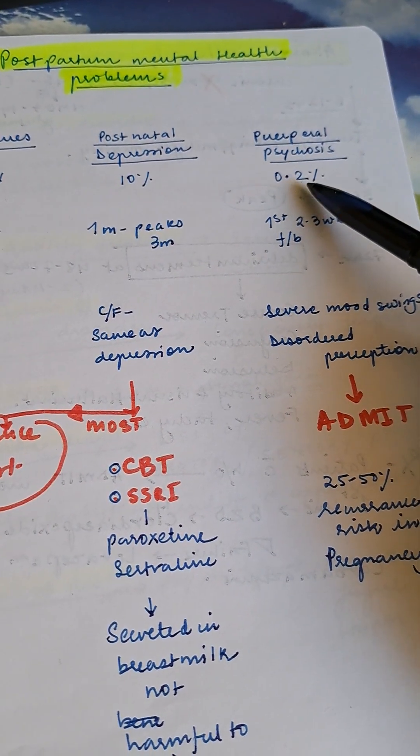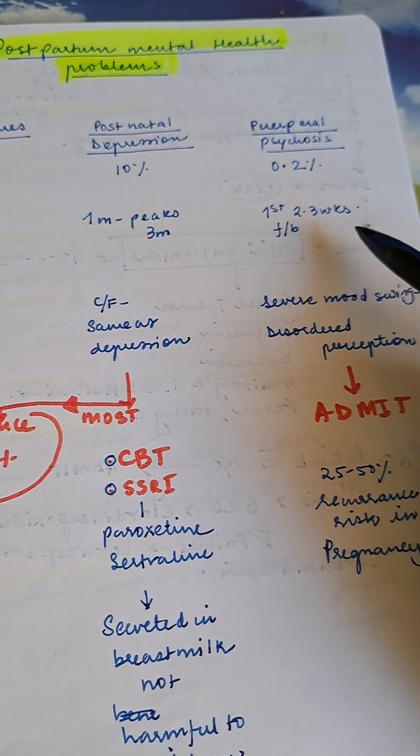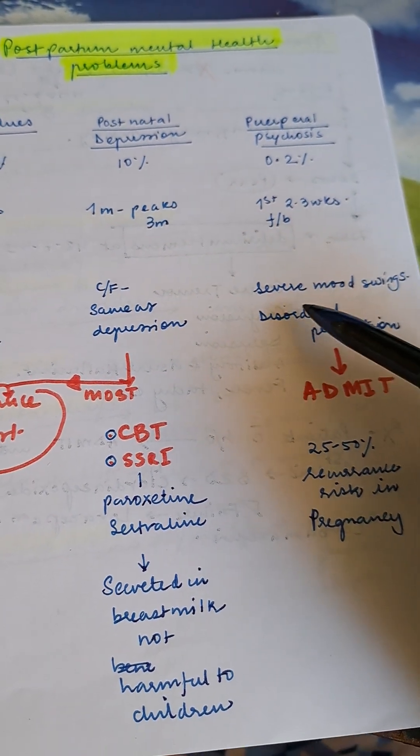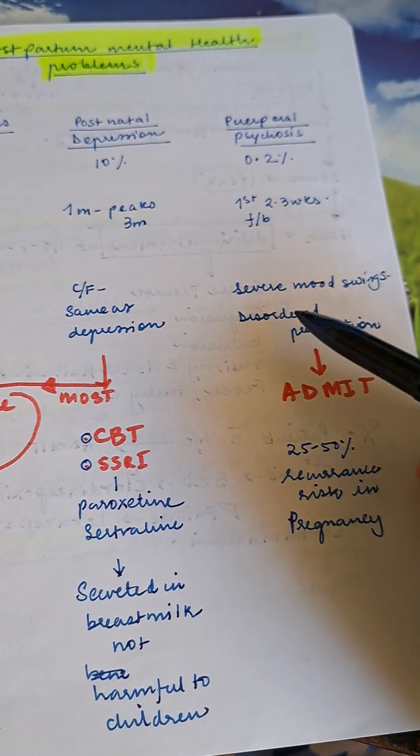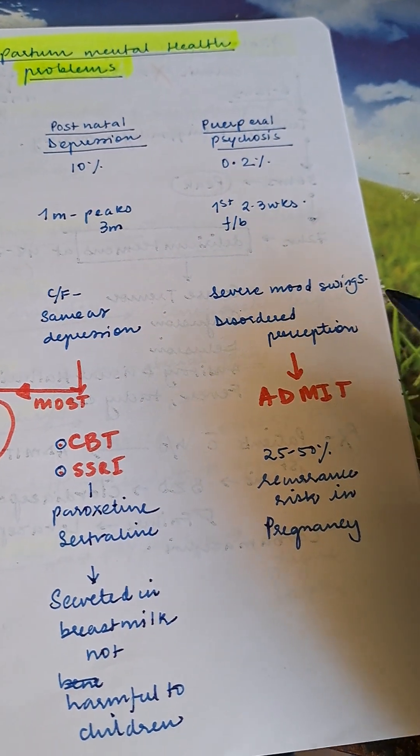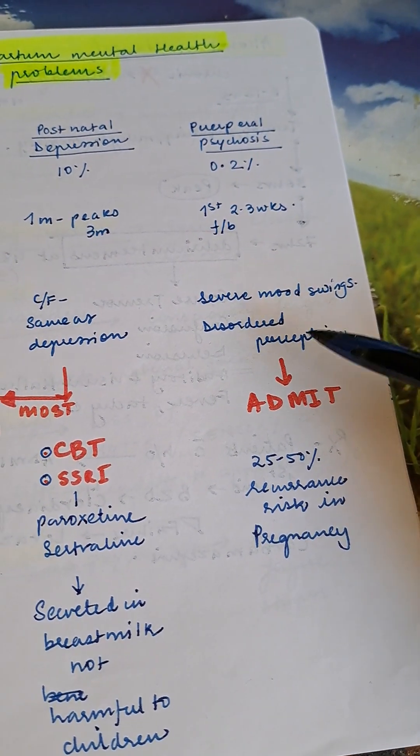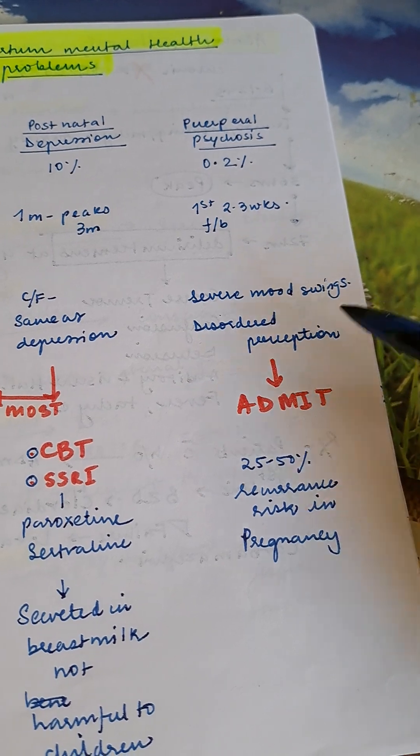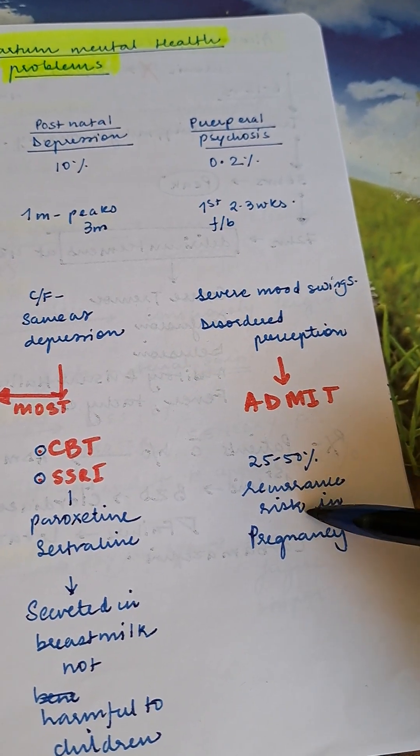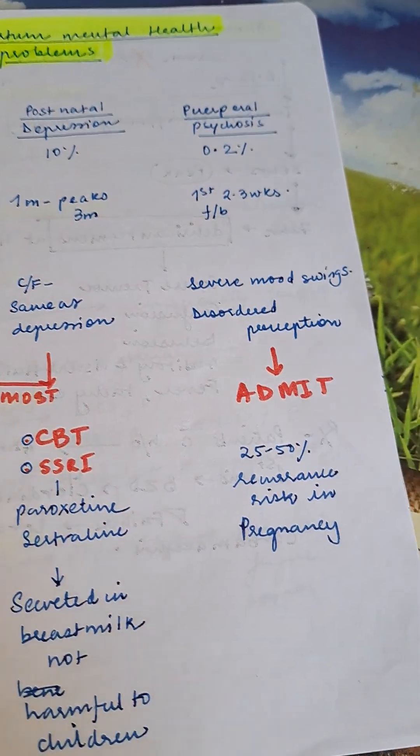Puerperal psychosis is present in 0.2%, in the first two to three weeks following birth. Severe mood swings and disorganized perception. Admit the patient. 25 to 50% recurrence risk in following pregnancies.